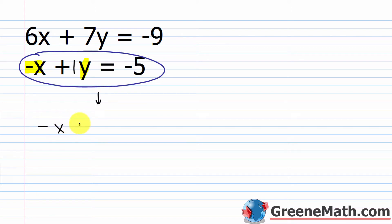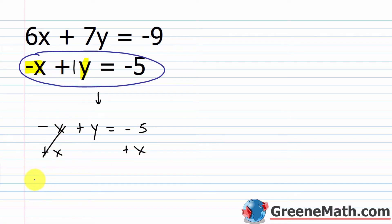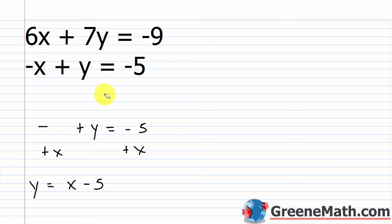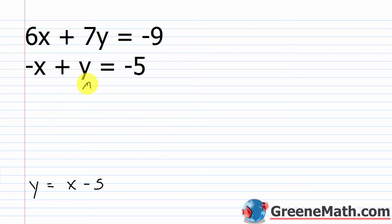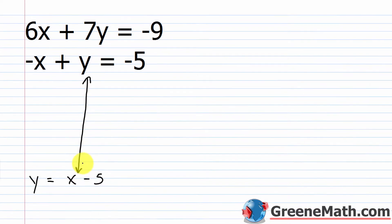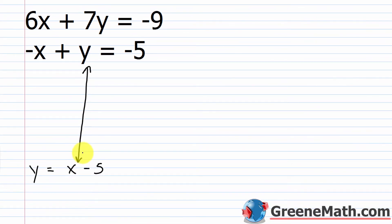Looking at the second equation, I have a coefficient of 1 on y, so it's very easy to solve for y. I have negative x plus y equals negative 5. Just add x to both sides, and I get y equals x minus 5. These two equations are exactly the same — I just transformed and solved for y.